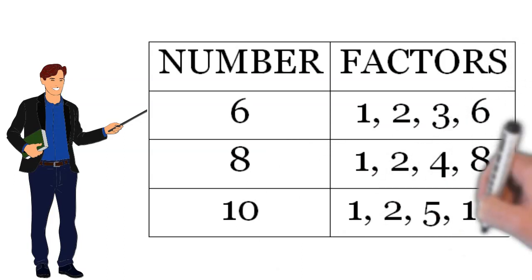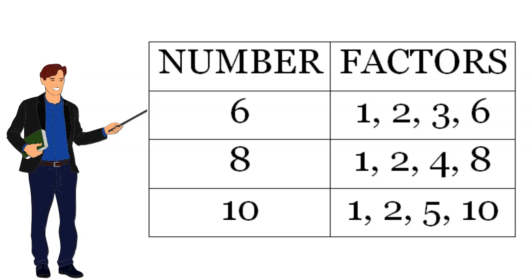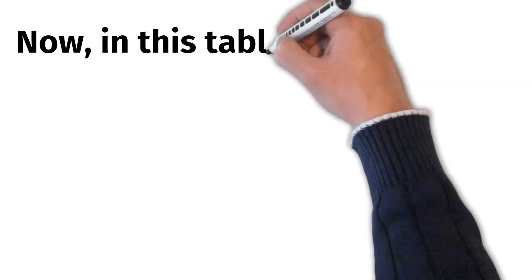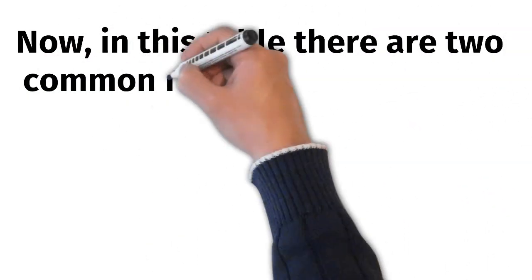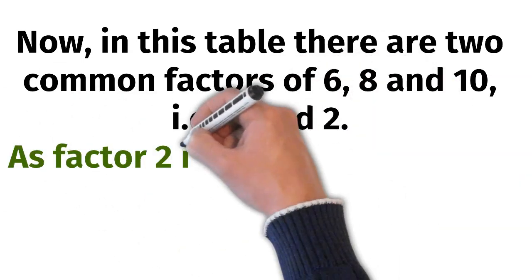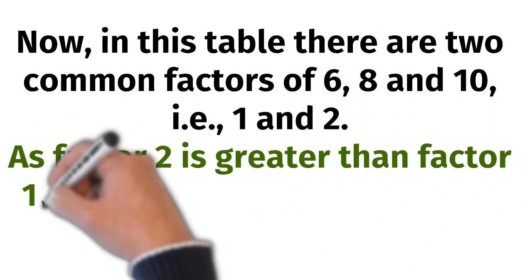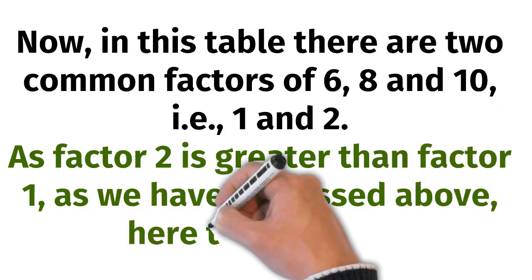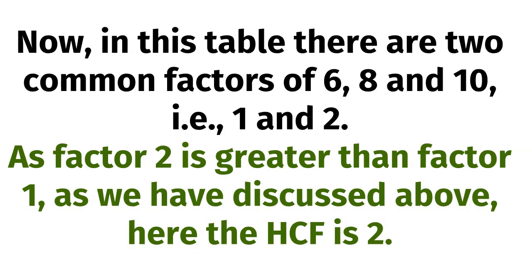For example, number 6 has factors 1, 2, 3, 6. Number 8 has factors 1, 2, 4, 8. Number 10 has factors 1, 2, 5, 10. Now, in the above table, there are two common factors of 6, 8 and 10 — that is 1 and 2. As factor 2 is greater than factor 1, the HCF is 2.